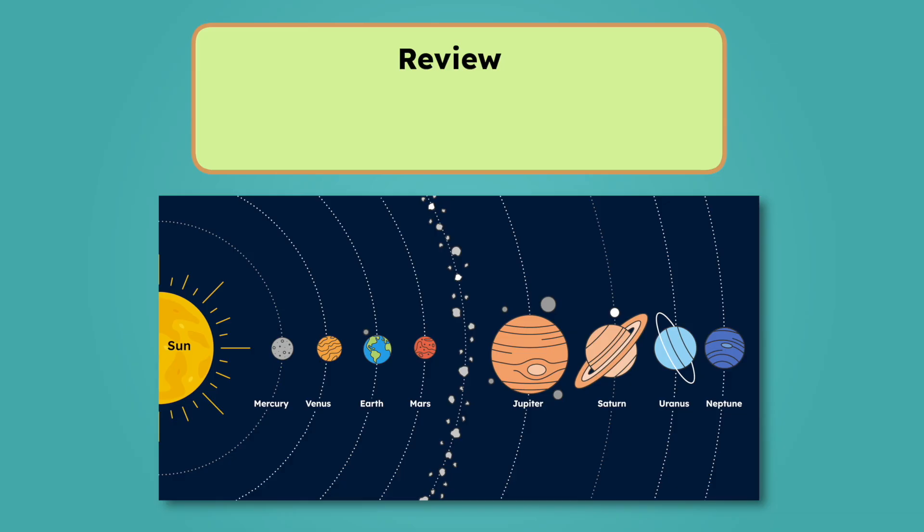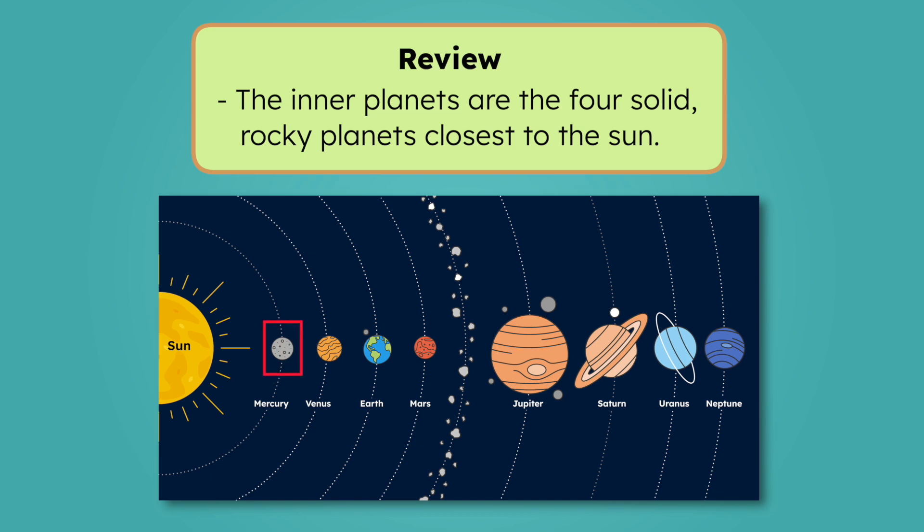Let's review everything we've learned today. The inner planets are the four solid rocky planets closest to the Sun. Mercury is the smallest and fastest planet with almost no atmosphere. Venus is the hottest planet with thick yellow clouds. Earth is the largest inner planet and the only one able to support life. And Mars is the red planet with cold temperatures and huge dust storms.